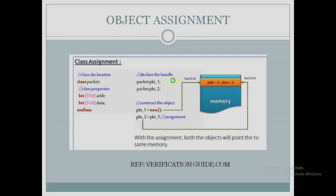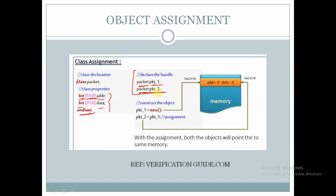Let us see an example for this object assignment. We take a class called packet and declare two variables of 32-bit size of bit data type called address and data, and then end the class packet. Here we are declaring the packet handles called pkt1 and pkt2.